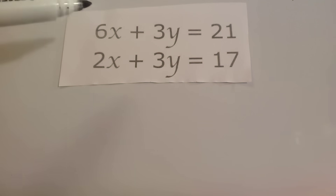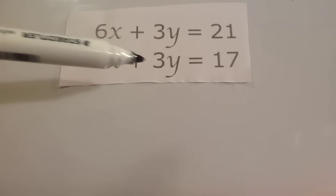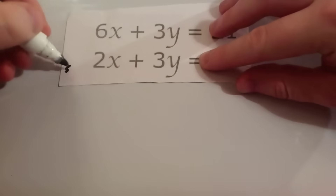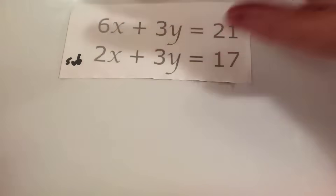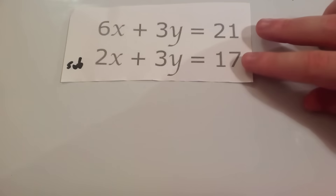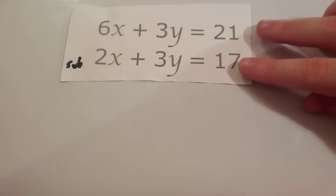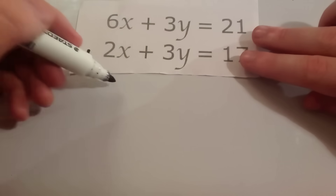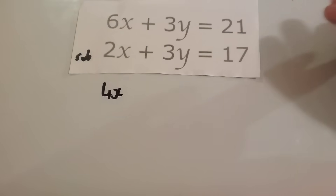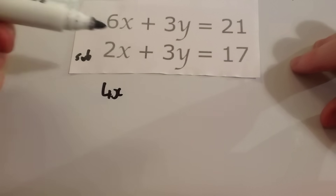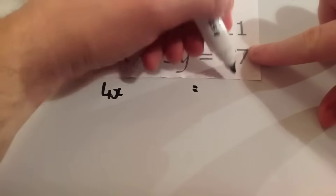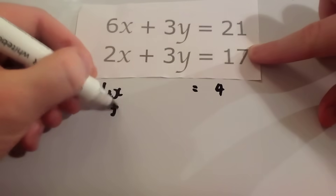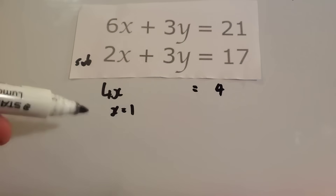Notice we've got 3y and 3y. To get rid of them, we can subtract the two equations from each other. I tend not to use a minus sign when doing simultaneous equations — I just write 'sub' and draw a line. So 6x take away 2x is 4x, 3y take away 3y is 0, and 21 take away 17 is 4. So we get 4x equals 4, and dividing by 4 gives us x equals 1.